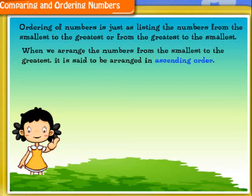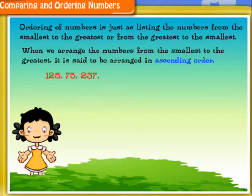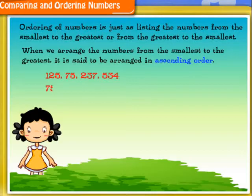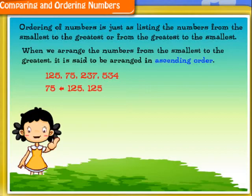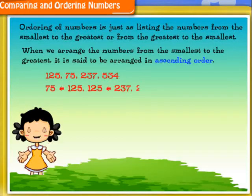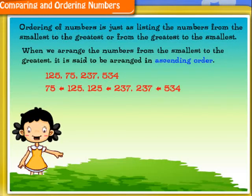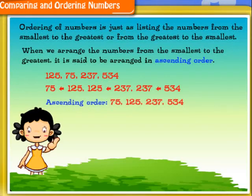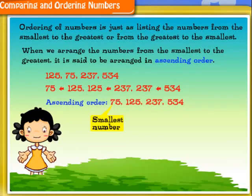Let us arrange the numbers 125, 75, 237, and 534. I know that 75 is lesser than 125, 125 is lesser than 237, and 237 is lesser than 534. Therefore, the given numbers can be arranged in ascending order like this. Here, 75 is the smallest whereas 534 is the greatest.